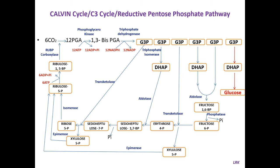Glyceraldehyde 3-phosphate formation takes place, and half of the molecules of glyceraldehyde 3-phosphate undergo isomerization forming DHAP — dihydroxyacetone phosphate. Among the 12 molecules, one molecule of glyceraldehyde 3-phosphate and one molecule of DHAP condense and form glucose in the cytoplasm. They diffuse into the cytoplasm, condense and form fructose 1,6-bisphosphate. Then one phosphate ion gets detached forming fructose 6-phosphate, which undergoes isomerization to glucose 6-phosphate, and later glucose formation takes place in the cytoplasm.